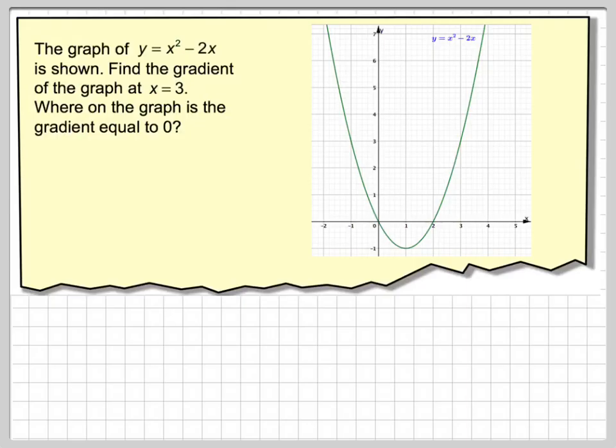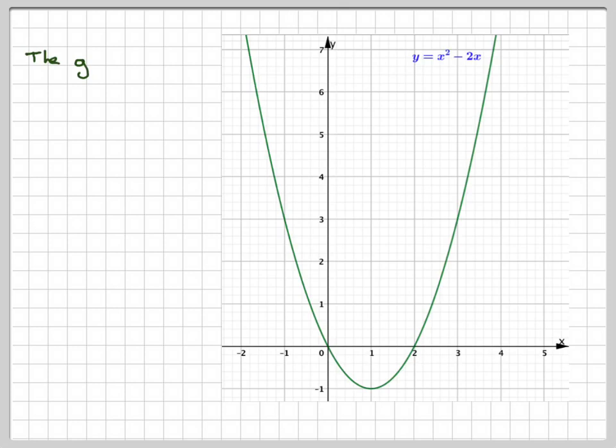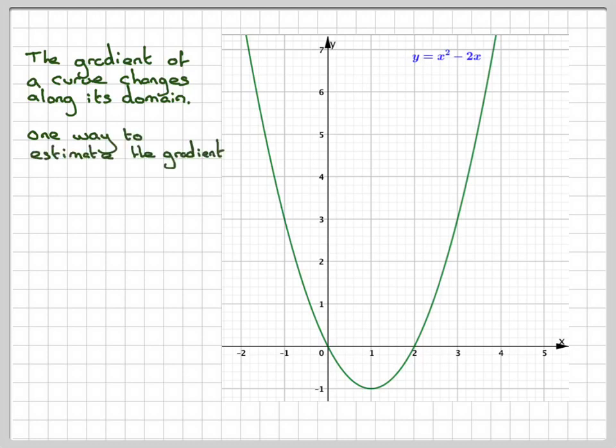So let's go back to this. So let's now do it by hand. So the gradient of the curve changes along its domain as I've just shown you. One way to estimate it, at a particular point, is to draw a tangent by eye. Now that's actually quite difficult to do.